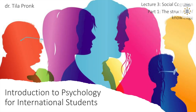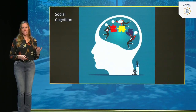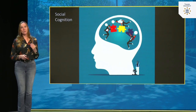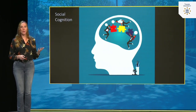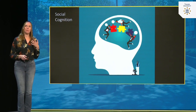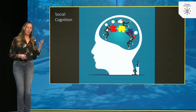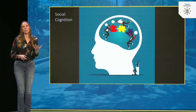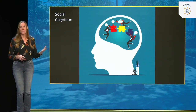This is lecture three. In this lecture we'll be discussing social cognition, and we'll start off by talking about how knowledge is structured in our brain. With social cognition, we refer to the ways in which people think about themselves and the social world around them — specifically how people select information, interpret information, remember it, and use social information to make judgments and decisions.